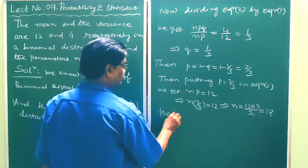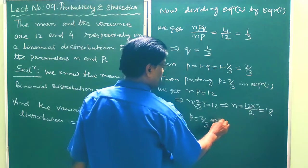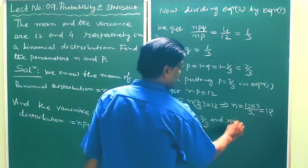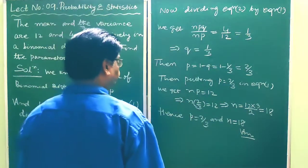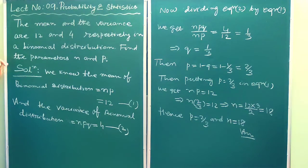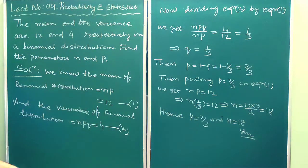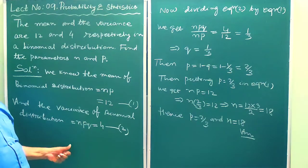So the mean is 12 and the variance is equal to 4. In a binomial distribution we have to find the parameters n and p. We know the mean of a binomial distribution is np, which is 12, and the variance of the binomial distribution is npq, which is 4.